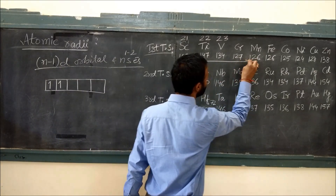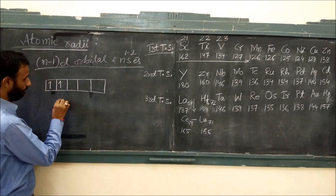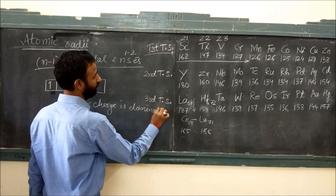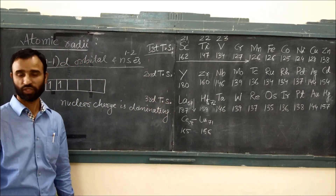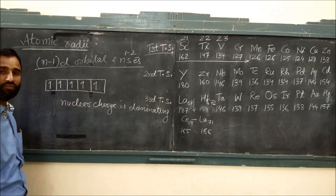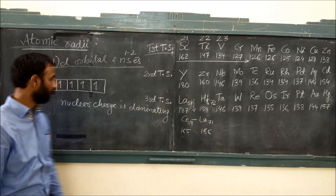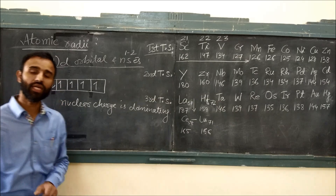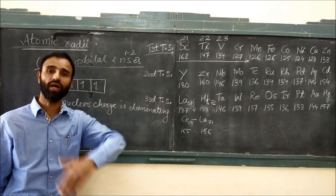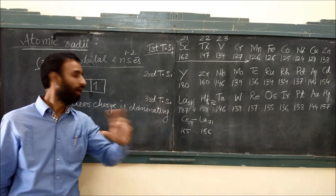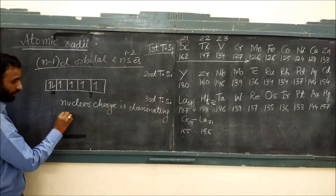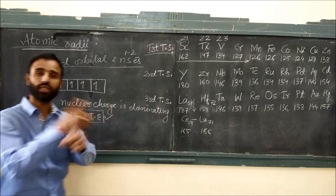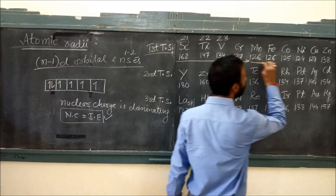At the start, nuclear charge is dominating over inter-electronic repulsion. Then, one more electron is added and pairing starts. As pairing starts, nuclear charge and inter-electronic repulsion — due to inter-electronic repulsion there is screening or shielding of the outer NS electrons — so nuclear charge and inter-electronic repulsion almost counterbalance each other. When they counterbalance each other, their size is almost similar.